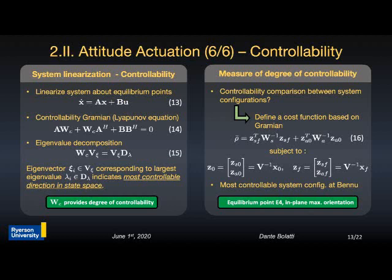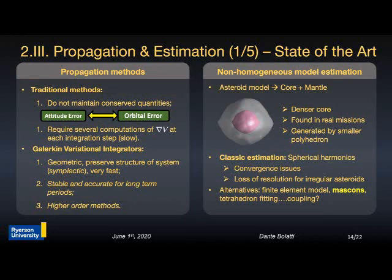Traditional numerical propagators directly integrate the equations of motion and do not maintain conserved quantities, meaning errors on attitude get translated to orbital dynamics and vice versa. Additionally, they require several computations of the gradient of the gravitational potential at each integration step, making them very slow for high-definition gravitational field models. In recent years there has been increased interest in geometric numerical integration methods, of which the Galerkin variational integrators are the most promising. They are geometric in nature, preserving the system structure, very fast, and allow construction of higher-order methods that are stable and accurate for long-term propagations.